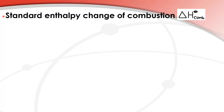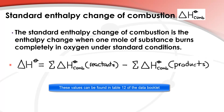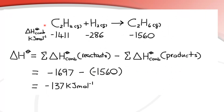Next is the standard enthalpy change of combustion, delta H comb — comb means combustion. The definition: the standard enthalpy change of combustion is the enthalpy change when one mole of a substance burns completely in oxygen under standard conditions. The equation is: enthalpy change equals the sum of the standard enthalpy change of combustion of the reactants minus the sum of the standard enthalpy change of combustion of the products. Note that this is reactants minus products — the opposite of the formation equation.